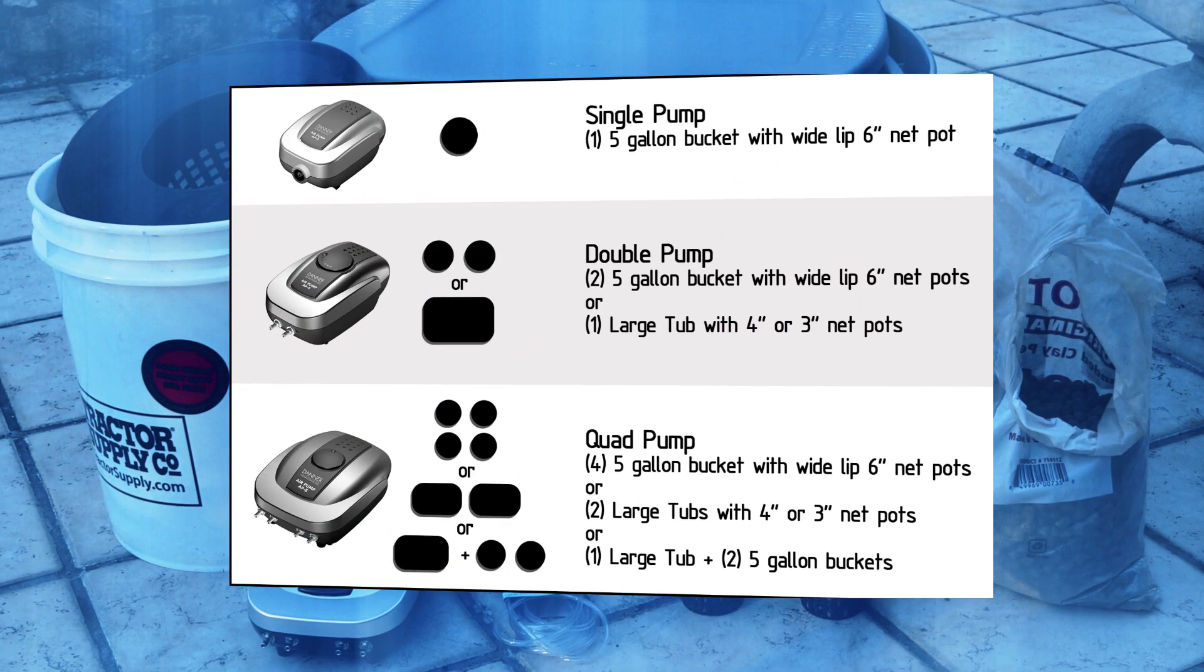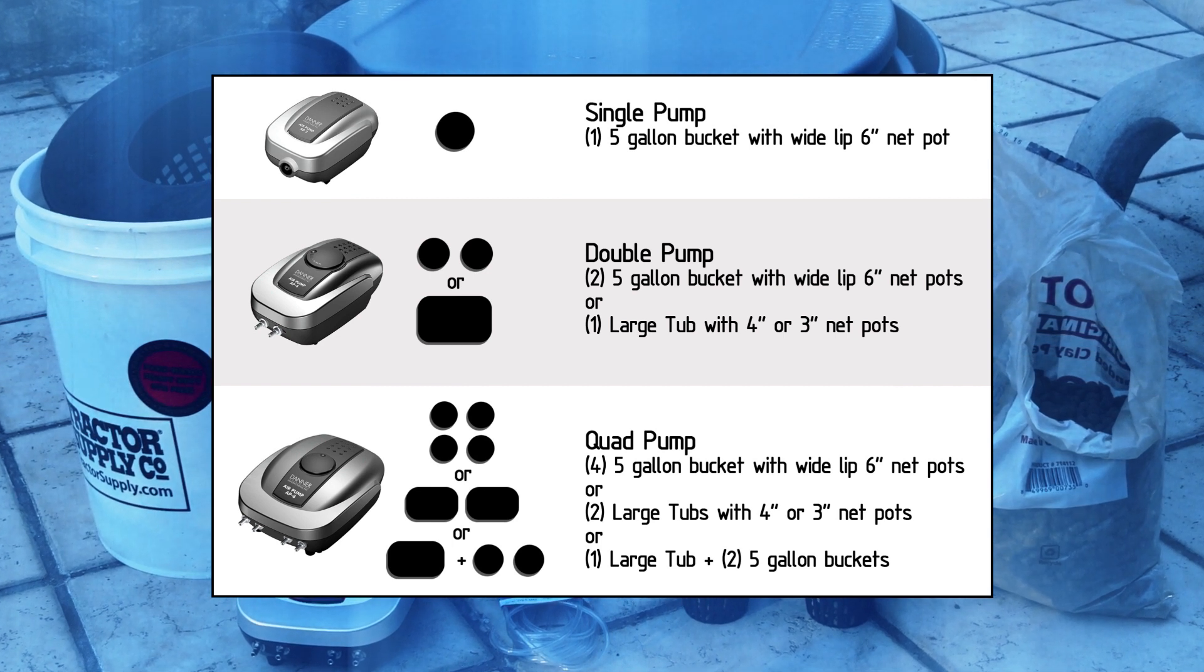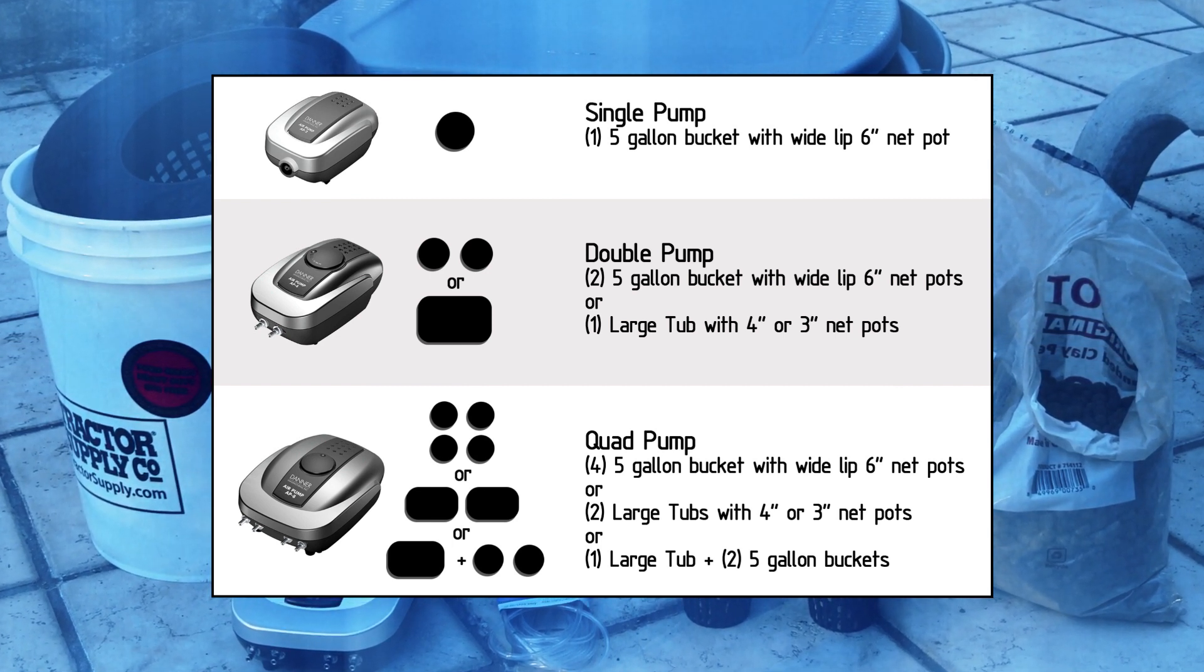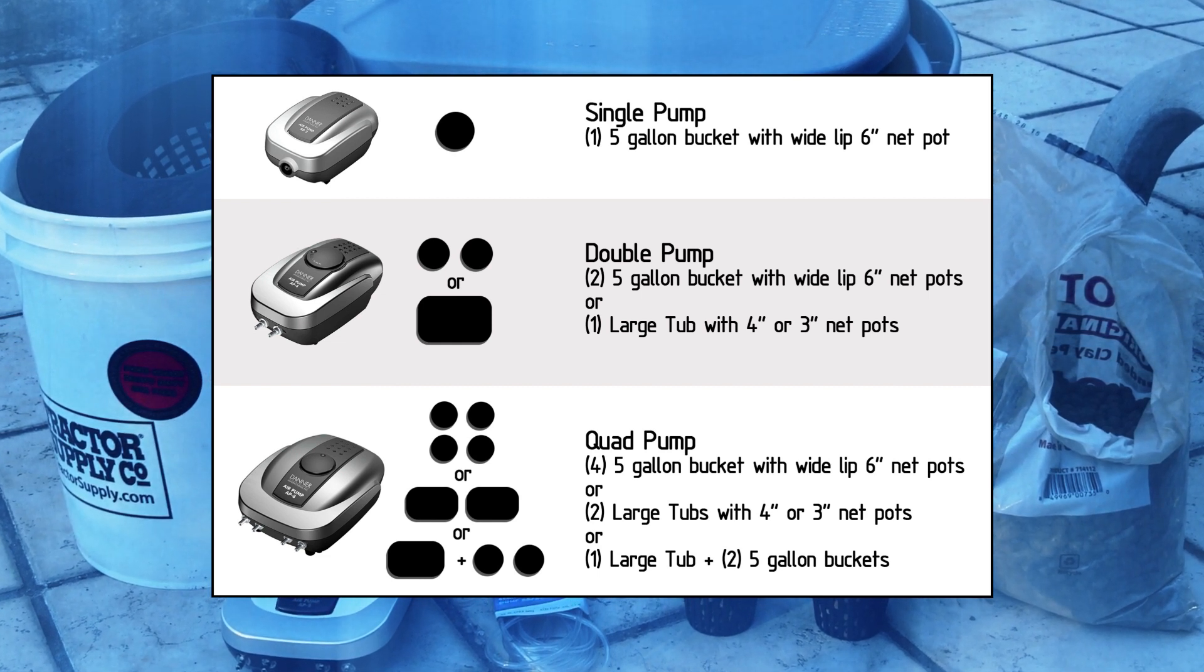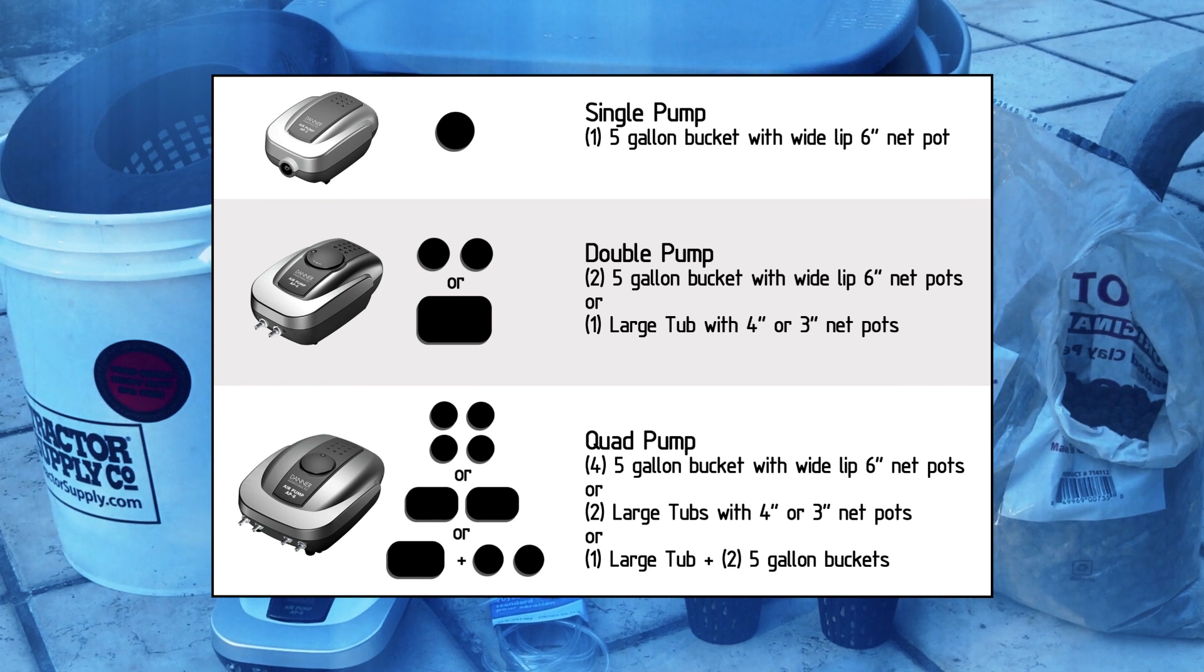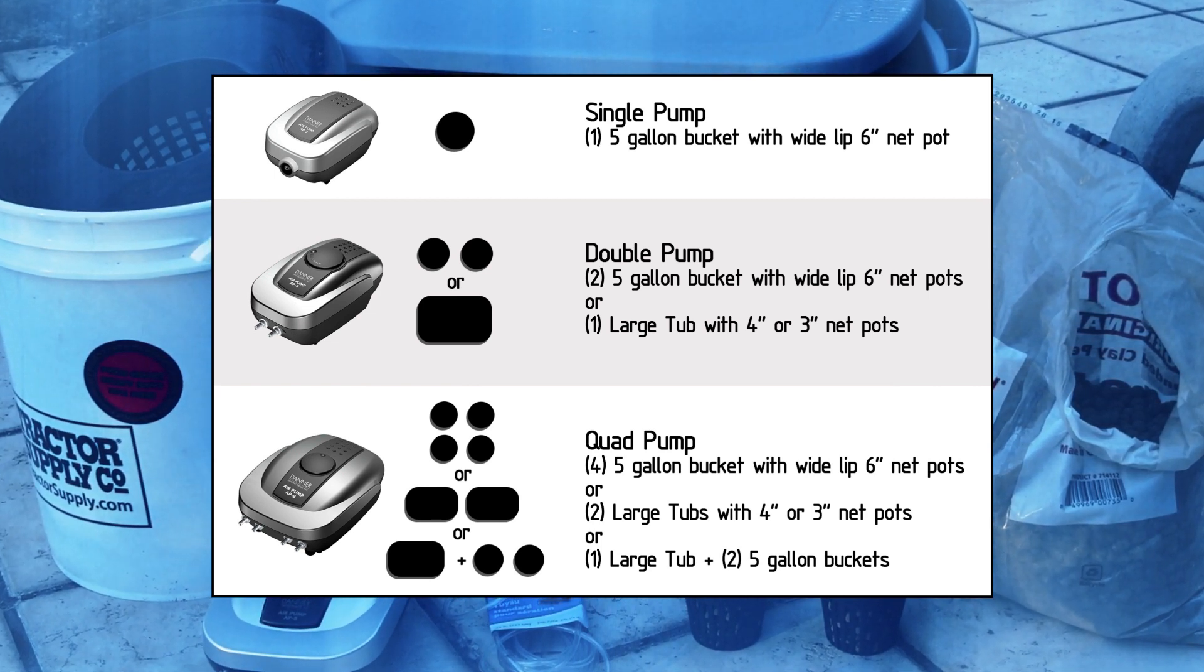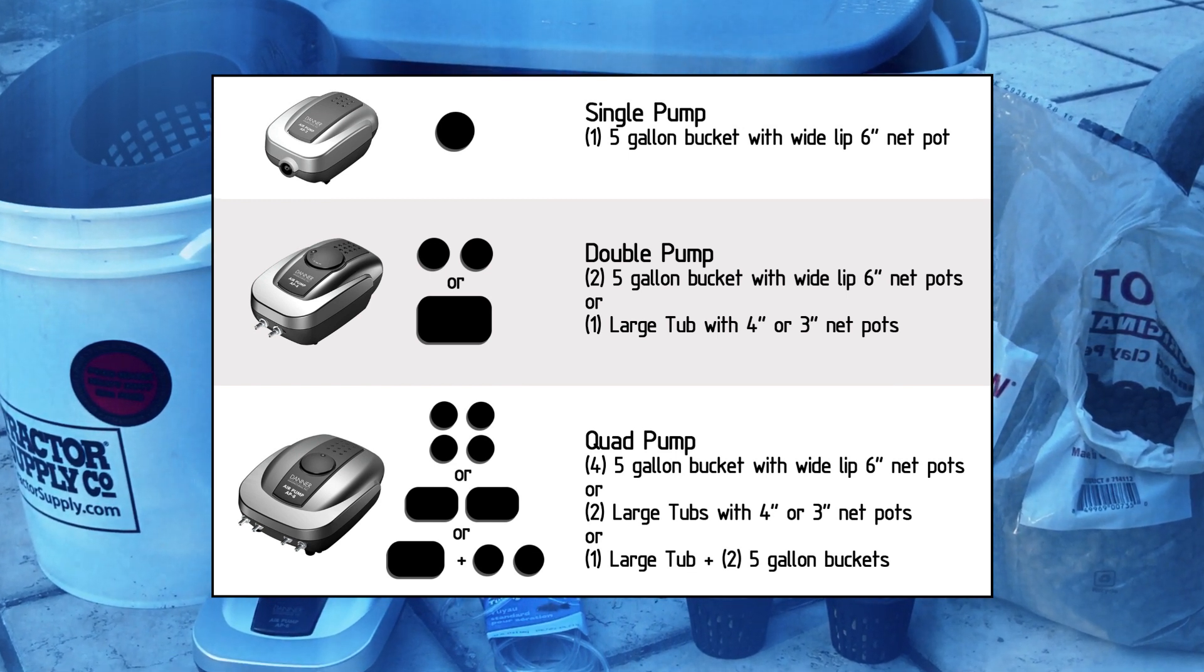Now, the first step is going to be planning your system, and you could do that in various ways depending on the size of your pump. If you're using a single outlet air pump, you could use one five-gallon bucket with a six-inch net pot, and that's good for one full-size cannabis plant. With a double pump, you can expand that to two five-gallon buckets or two large plants, or you could use a large tub with several of the four or three-inch net pots, say if you're growing autoflower.